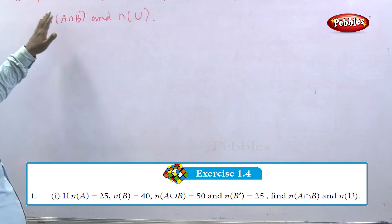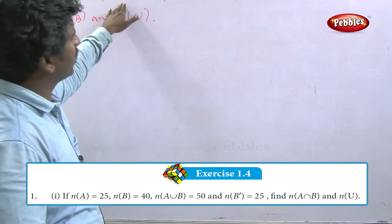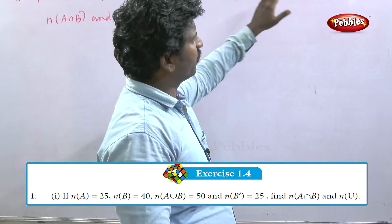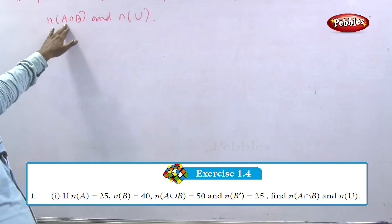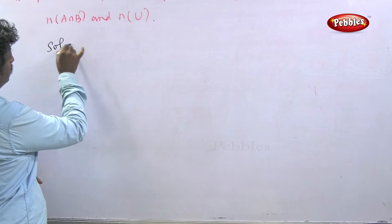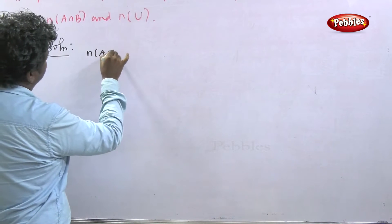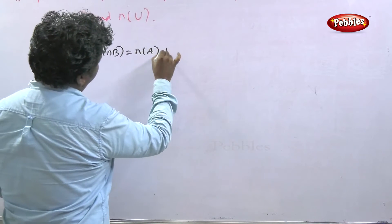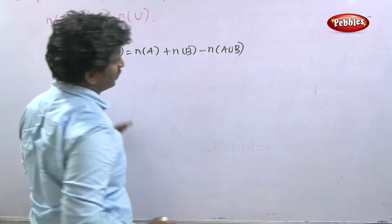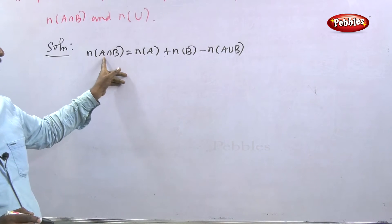Question number one in Exercise 1.4: if n of A is equal to 25, n of B is equal to 40, n of A union B is equal to 50, and n of B dash is equal to 25, find n of A intersection B and n of U. Solution: write the formula — n of A intersection B is equal to n of A plus n of B minus n of A union B.